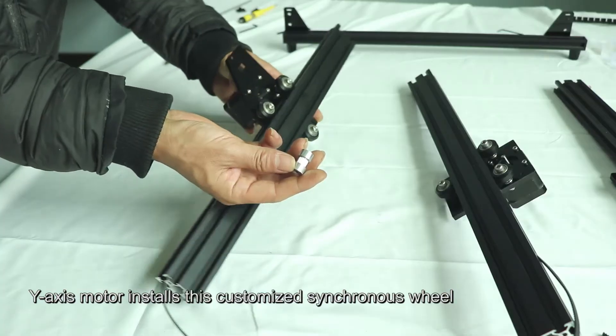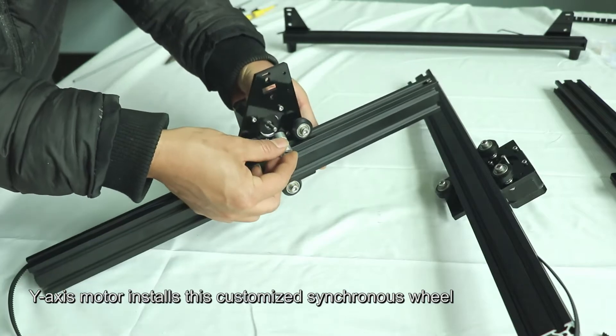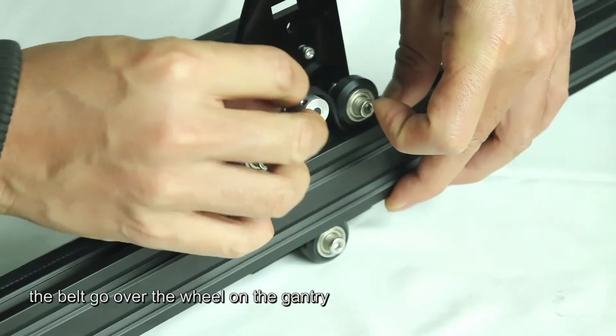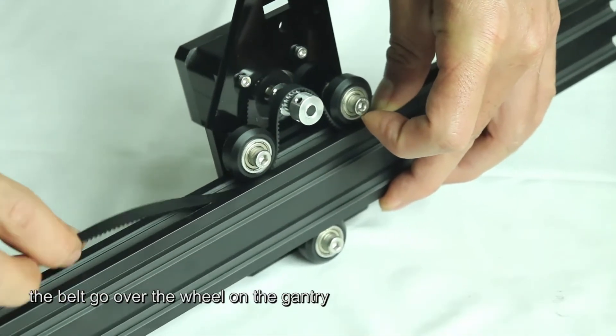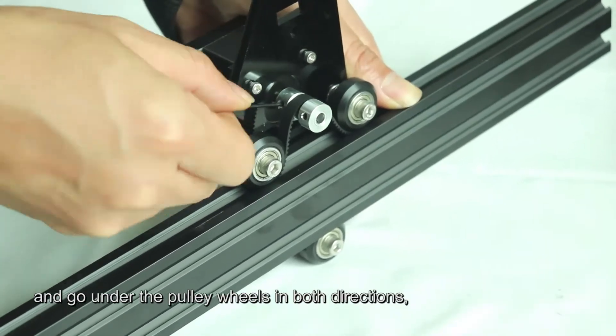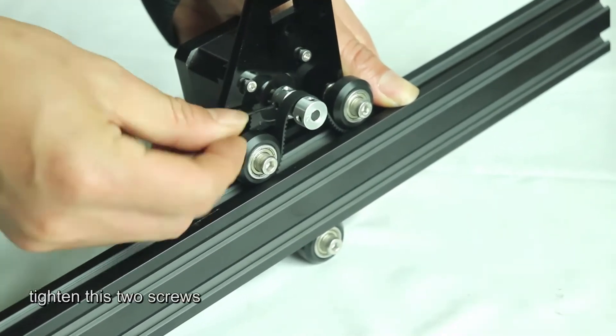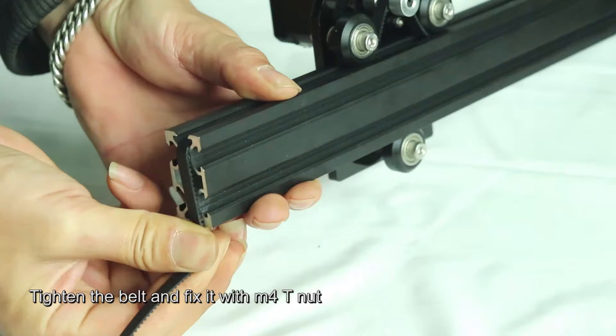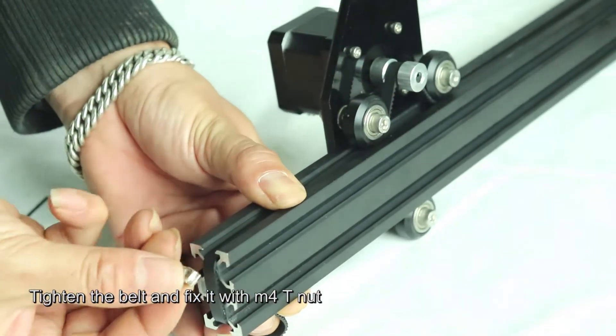Y-axis motor installs this customized synchronous wheel. The belt goes over the wheel on the gantry and goes under the pulley wheels in both directions. Tighten these two screws. Tighten the belt and fix it with M4 T nut.